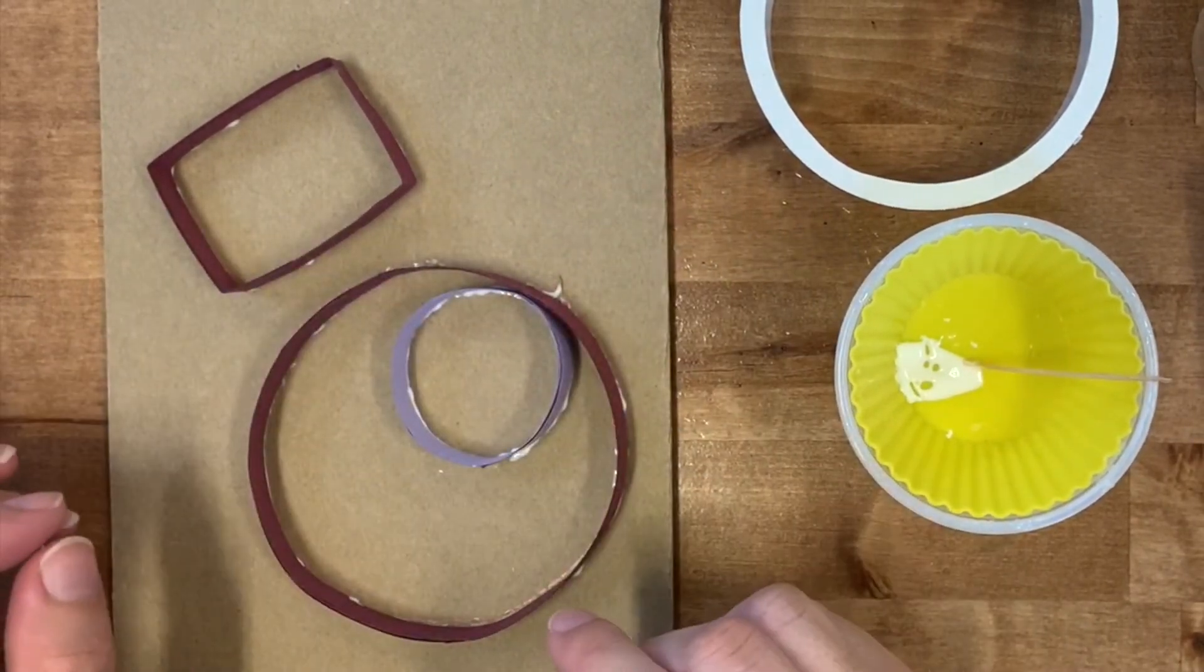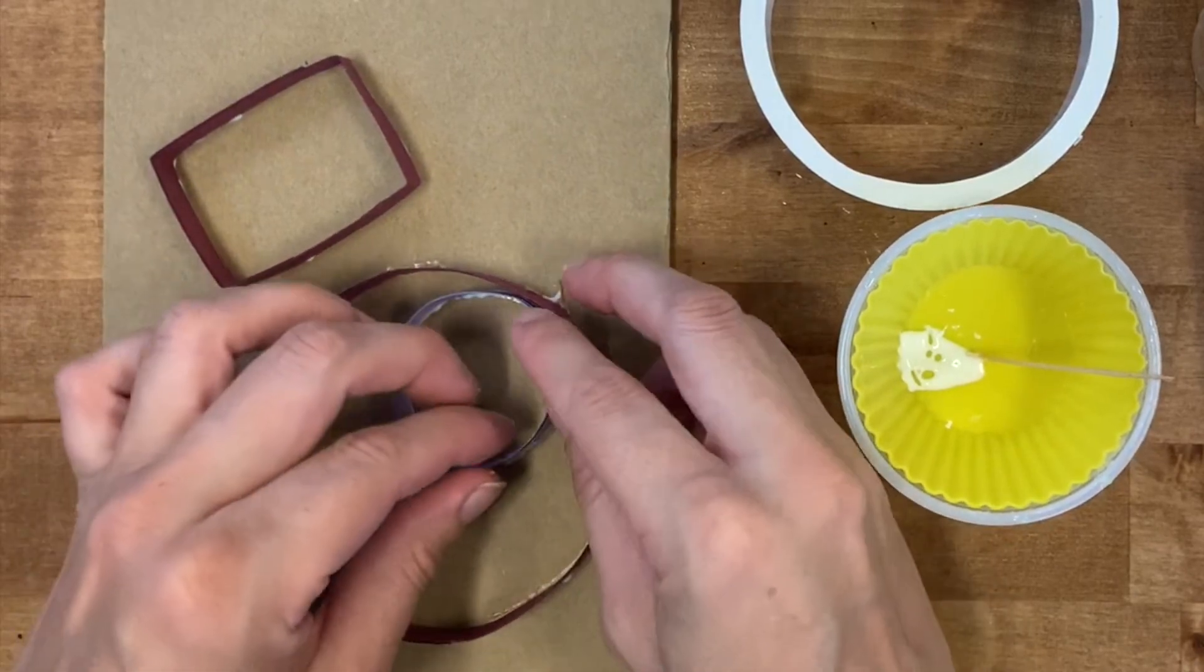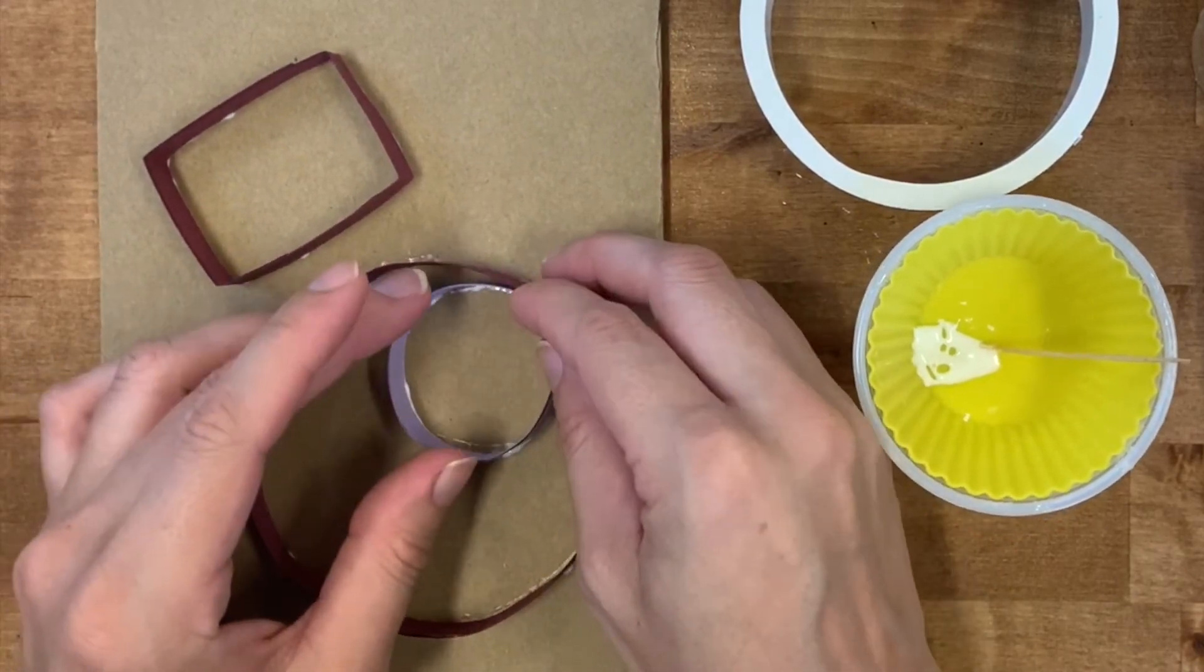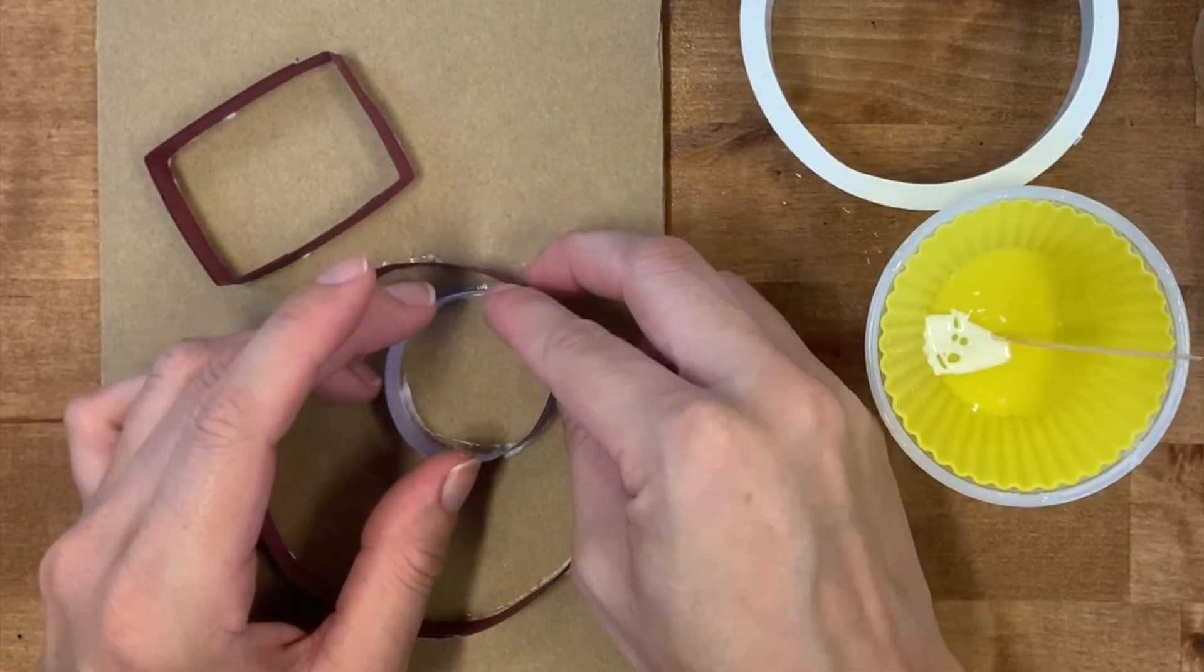You might notice that you can see a little bit of the glue around the edges of the circle. When the glue dries, it'll be clear so you won't need to worry about that.